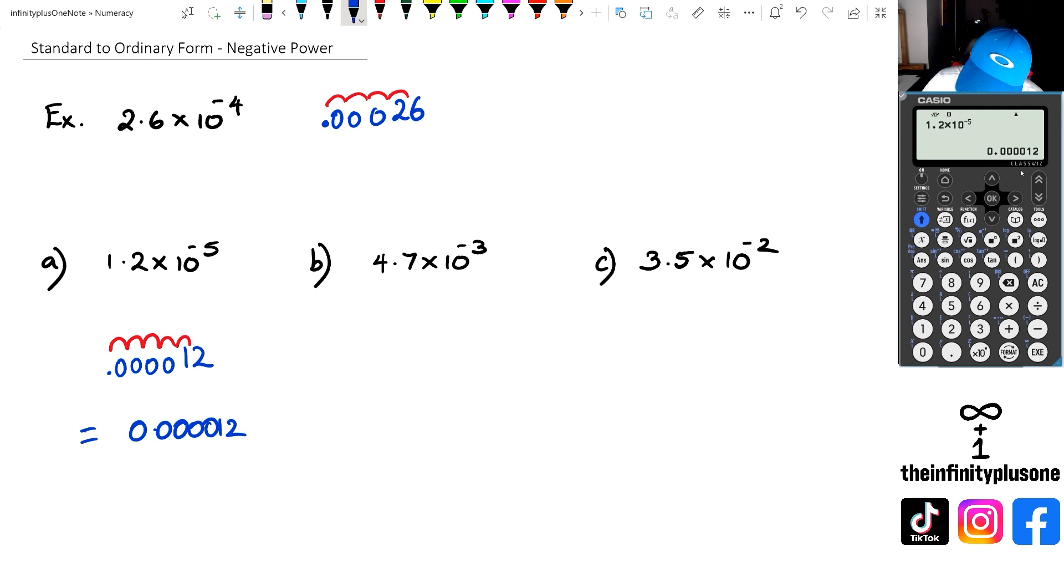Looking at question b), so we've got 4.7, so I'm going to start it out as 47. And I'm moving the decimal point one number, two numbers, three numbers, so I'm going to get 0.0047. So let's just try that out quickly. So we're going to go 4.7 times 10 to the power of negative 3. That's going to give me 0.0047. So far so good.